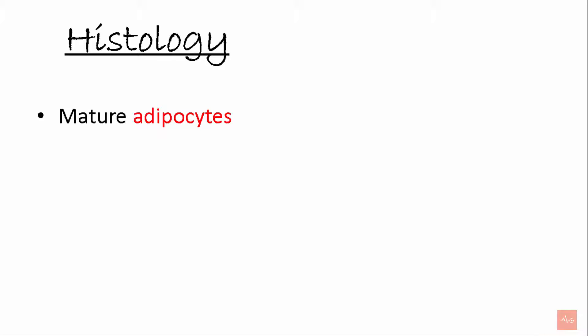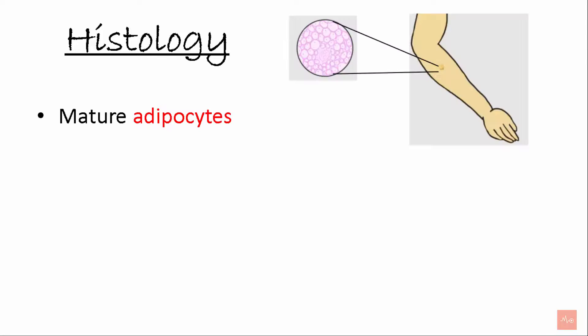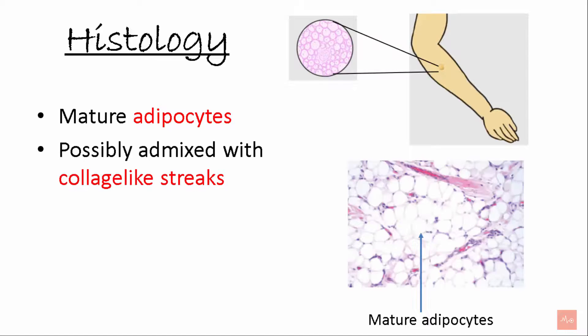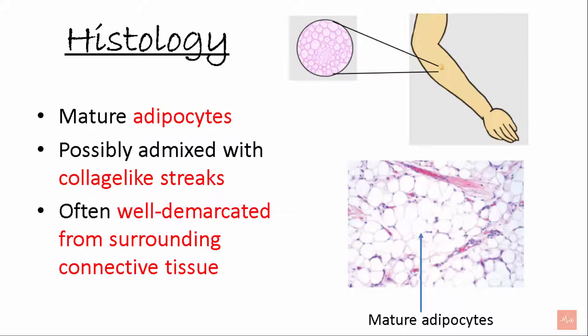Moving on to histology — it contains mature adipocytes, possibly admixed with collagen-like streaks. It is often well demarcated from the surrounding connective tissue. The cells of lipoma differ metabolically from natural fat cells even though they are histologically similar.